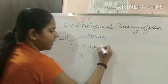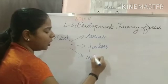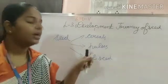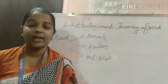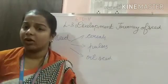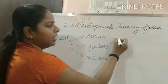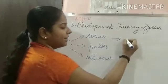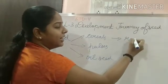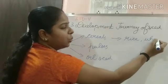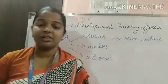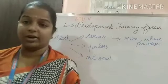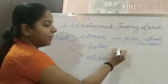The three categories of seeds are: one is cereals, another one is pulses, and the next one is oil seeds. What are cereals? Cereals are seeds that cannot be divided into two equal halves — when you try to break these seeds, they become powder. Examples of cereals are rice and wheat. Cereals contain carbohydrates.